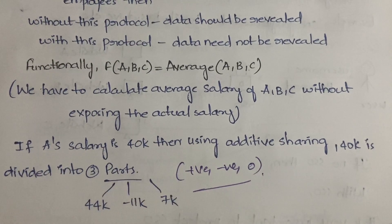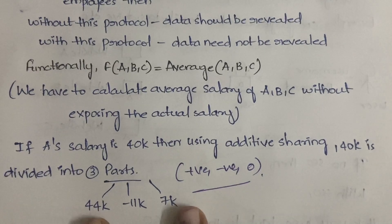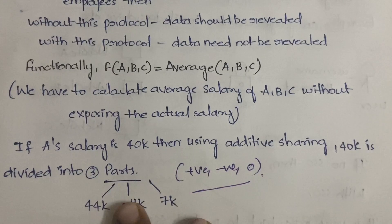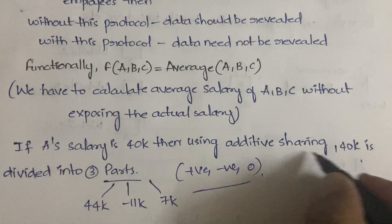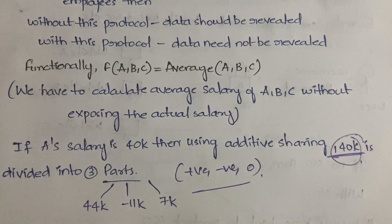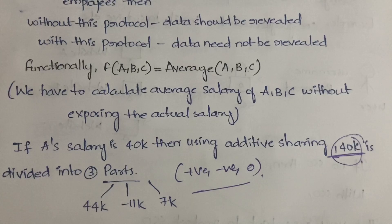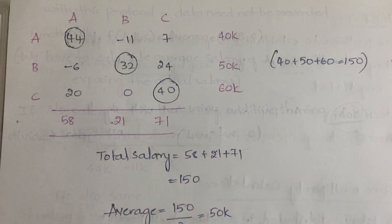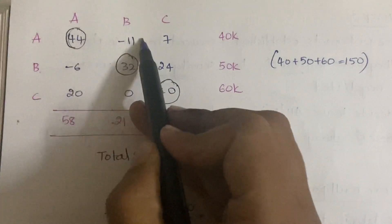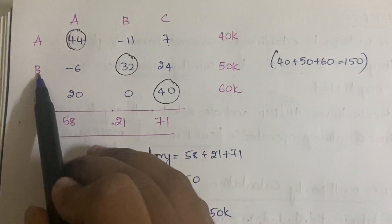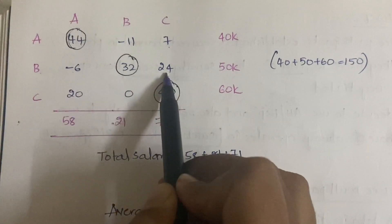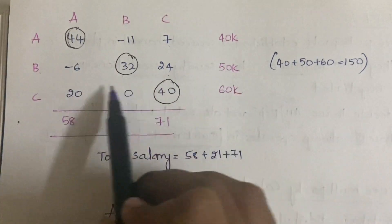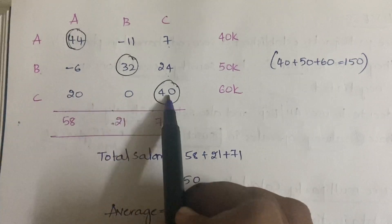These randomly generated parts can be positive, negative, or zero, but when you add them all together they must equal the original salary: 44 + 7 = 51, minus 11 = 40. So 40,000 is A's original salary, which she doesn't want to disclose — so she splits it into those three parts. Similarly, B's three parts are -6, 30, and 24, which sum to 50 (i.e., B's salary is 50,000). And C's parts are 20, 0, and 40, which sum to 60 (i.e., C's salary is 60,000).